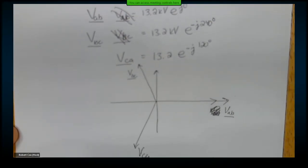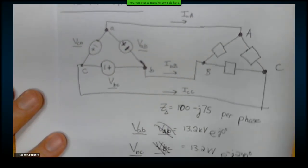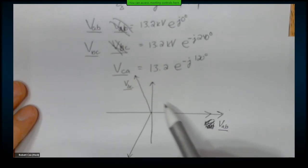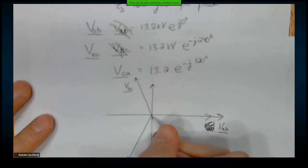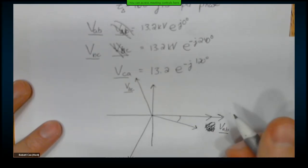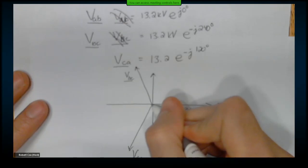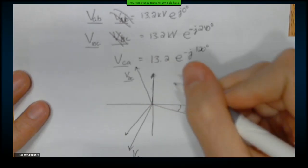I want to convert this circuit over. So instead of having the delta connection, I want to convert this over to a Y equivalent. So if here's VAB, VBC, VCA, I know that my line-to-neutral voltage is 30 degrees behind the line-to-line voltage. And this one would be 30 degrees behind, and this one would be 30 degrees behind as well.